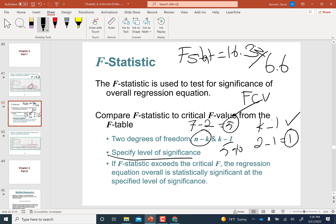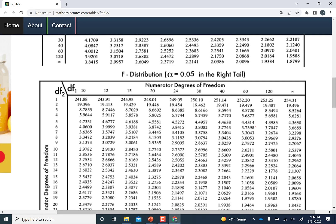Because the F statistic exceeds 6.6, the critical value, we're going to reject the null hypothesis that the F value is zero. What we can see is that the overall regression equation is statistically significant at 5 percent level.